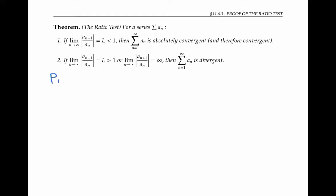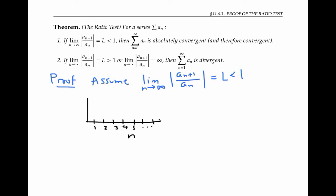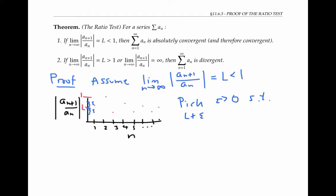To prove that the ratio test works, let's first assume that the limit is less than one. This means that if I graph n on the x-axis and the absolute value of the ratio of consecutive terms on the y-axis, I get a bunch of dots that settle at a value of L, and this number L is less than one. Let's pick a tiny number epsilon, so that when I add epsilon to L, I'm still less than one — so epsilon greater than zero such that L plus epsilon is less than one.